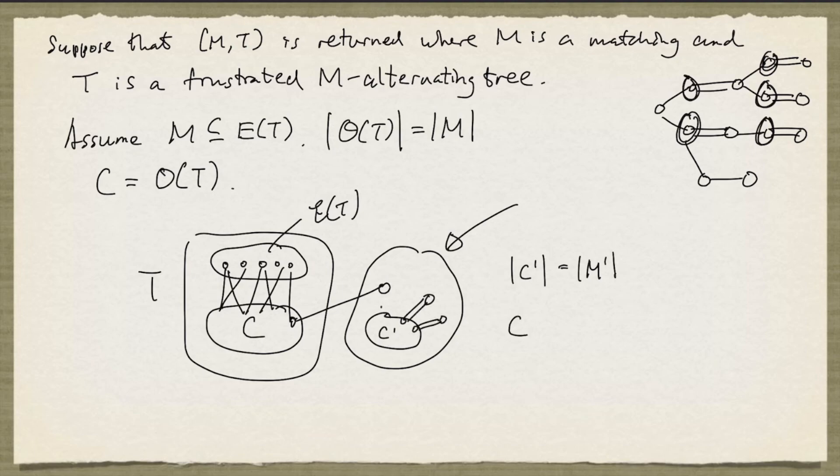And now we claim that C union C' is a node cover of the original graph.